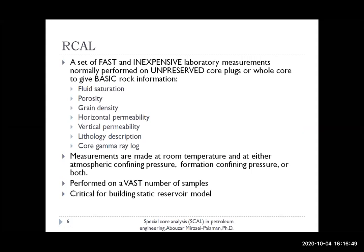By definition, RCAL is a set of laboratory measurements that are fast and inexpensive. They are normally performed on uncleaned core plugs or whole cores, and they give us basic rock information such as fluid saturation, porosity, grain density, permeability — either horizontal or vertical — lithology description, and core gamma ray. RCAL measurements are normally made at room temperature under either atmospheric confining pressure, formation confining pressure, or both. Because they are fast and inexpensive, they can be performed on a vast number of samples, and they are critical for building the static reservoir model.